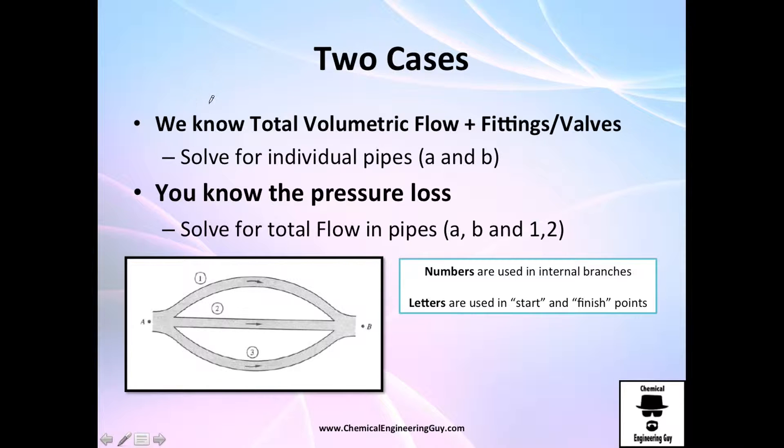We have two cases. Normally, the typical application is either you know the pressure drop that exists - let's talk about this as a black box, from A to B we have a pressure drop - and we don't know volumetric flow rates, so we want to calculate the volumetric flow rates in each one of them, and of course in A and B, which is this one right here, second case.